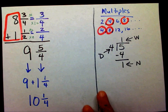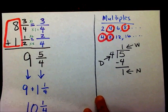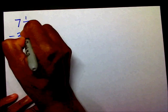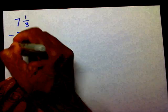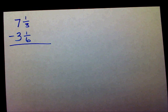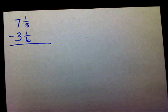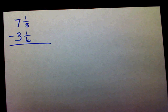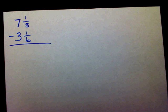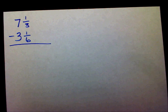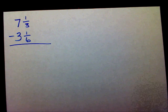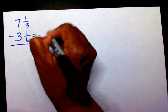Let's try another one. I have 7 and 1 third minus 3 and 1 sixth. I've always told you that whenever you add or subtract fractions, you have to have the same denominator. I can't say that enough. I really can't because I see too many students just adding the numbers. You just can't add the numbers. You have to get a common denominator.